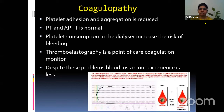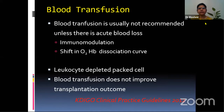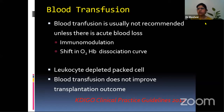All these problems can potentially increase blood loss. However, in our experience, the blood loss is less and patients rarely require blood transfusion. According to the Kidney Clinical Practice Guidelines 2012, blood transfusion is usually not recommended unless there is acute blood loss during reperfusion. Blood transfusion is like transplanting another organ — it causes immunomodulation and a shift in the oxygen-hemoglobin dissociation curve. If needed, leukocyte-depleted packed cells should be given. Blood transfusion does not improve transplantation outcome.